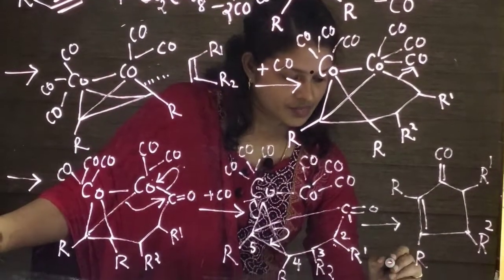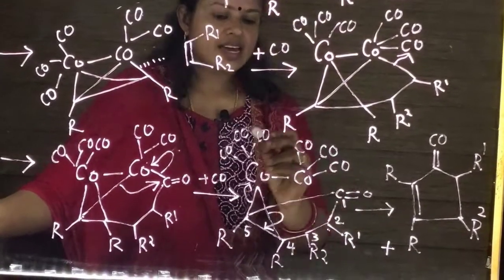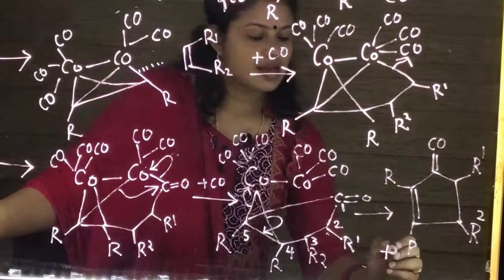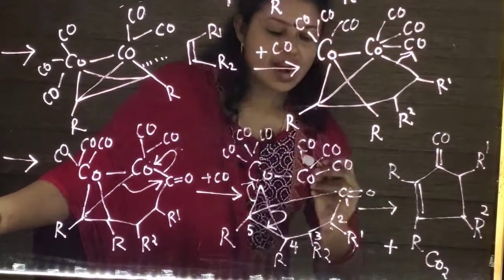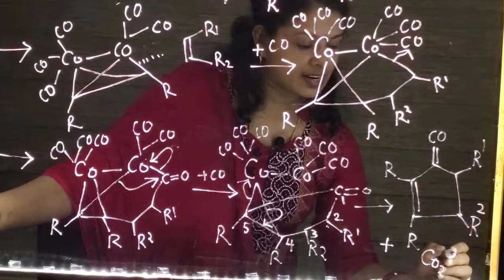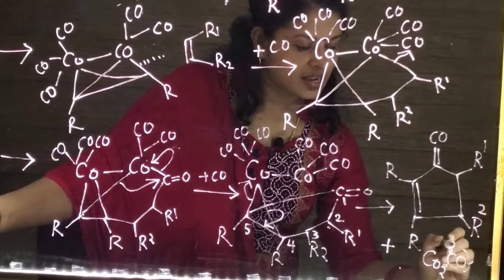And then the cobalt hexacarbonyl is remained. And this cobalt hexacarbonyl added to two more carbon monoxide molecules. And finally cobalt octacarbonyl is retained.